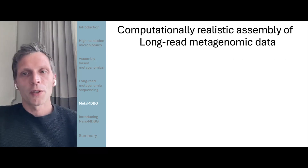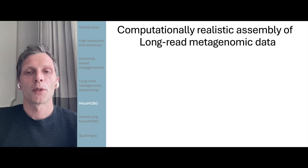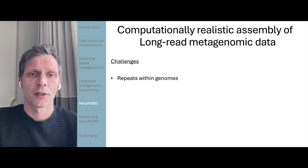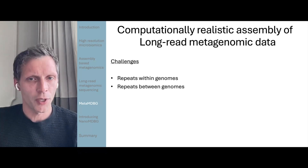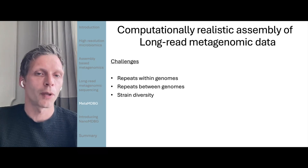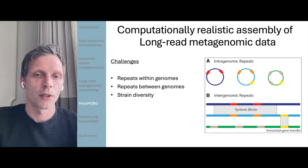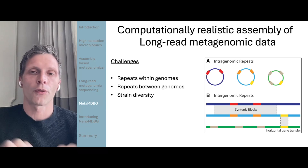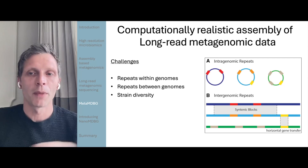In terms of computationally realistic assembly of long read metagenomic data, this is quite important because you don't want to be spending 95% of your budget on Amazon Web Services time. The challenges to long read metagenomic assembly are firstly repeats within genomes and then repeats between genomes — areas of shared genetic homology really do confuse assemblers — alongside things like strain diversity, which again involves those conserved regions. The idea of long read sequencing is to actually extend either through these repeats or areas of shared genetic homology to provide some sort of anchor point for the assembly to make it through these areas.